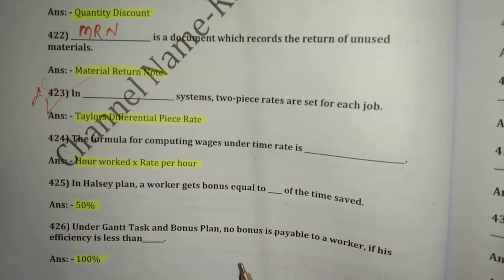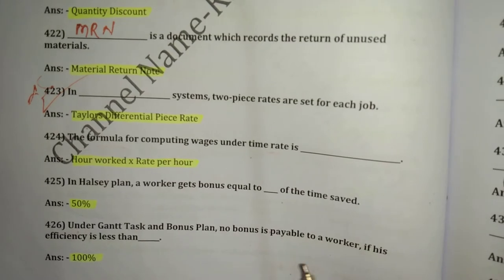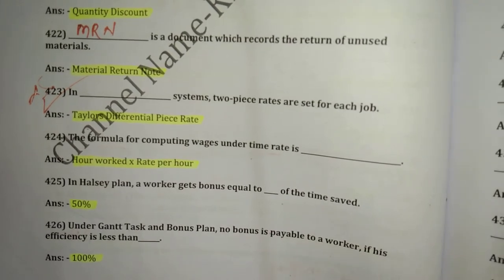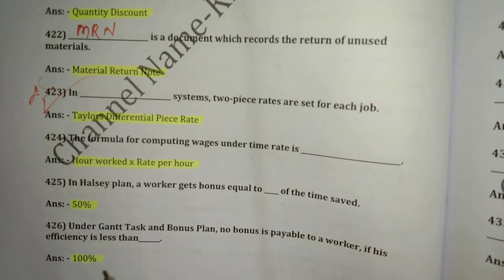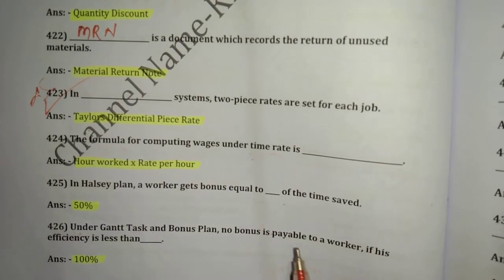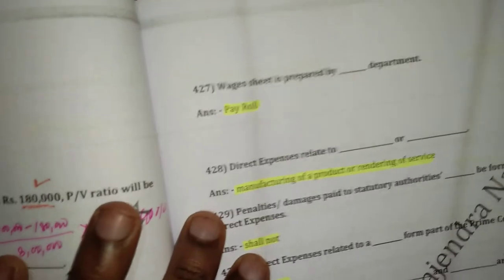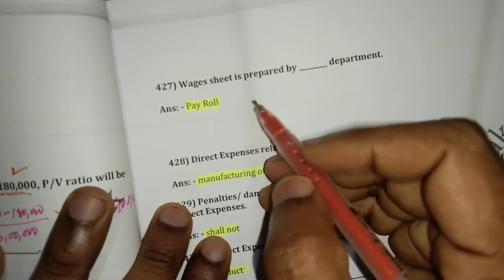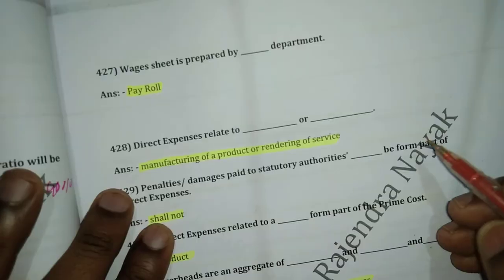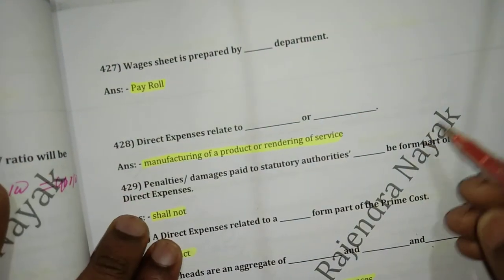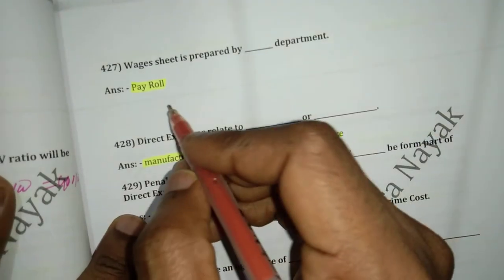Question number 426: Under the Gantt Task and Bonus Plan, no bonus is payable to a worker if their efficiency is less than 100%. Question number 427: Wage sheet (OJ sheet) is prepared by the payroll department.